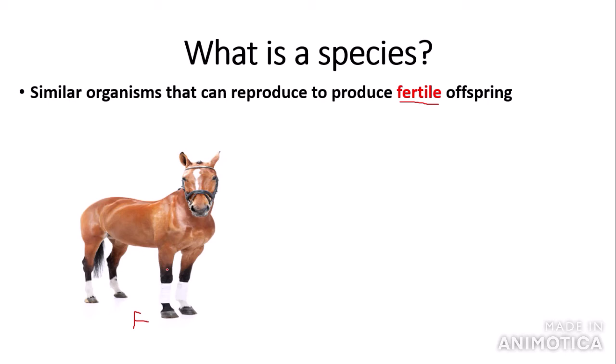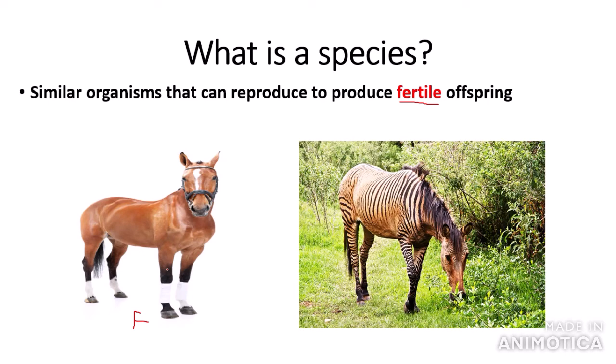Here we have a different organism called a zorse, which is a cross between a zebra and a horse. As zebras and horses are different species, the zorse is most of the time infertile, most commonly due to chromosome number differences between the two different species. This is also a way for scientists to figure out if two similar-looking organisms are the same species — they interbreed them, and if they produce fertile offspring they are the same species; if they don't, they are different species.